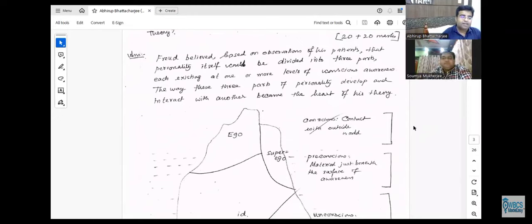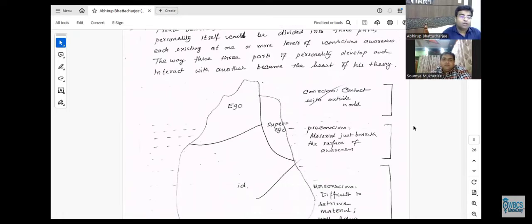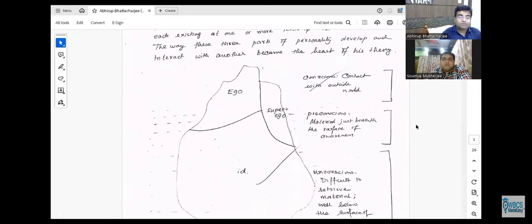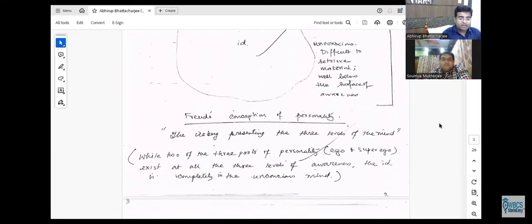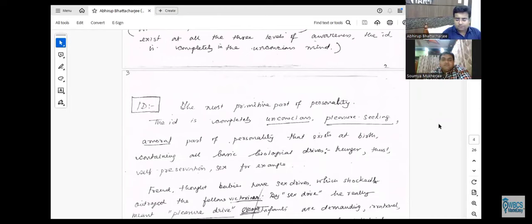I will say it is Freud. Id, ego, superego. Freud is the same questions of personality, the different levels of mind: conscious, subconscious.